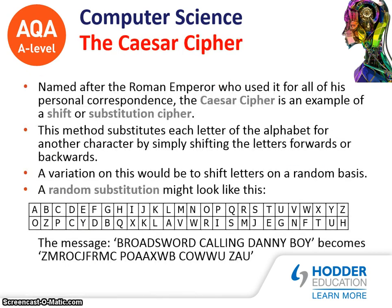One encryption method is the Caesar cipher, named after the Roman Emperor who used it for all of his personal correspondence. The Caesar cipher is an example of a shift or substitution cipher — this method substitutes each letter of the alphabet for another character by simply shifting the letters forwards or backwards. A variation would be to shift letters on a random basis. With random substitution, each letter is randomly allocated another letter. The message 'Broadsword calling Danny Boy' becomes an encrypted message, and the only way to decrypt it is if you have the decryption key, which allows you to unscramble the message.